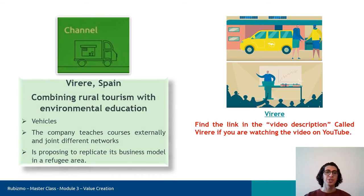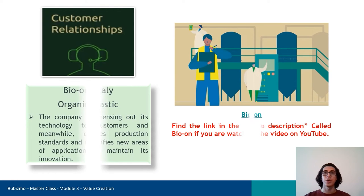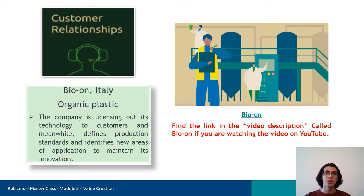As for the channels, vehicles transport tourists from the airport to the company, and the company teaches courses externally and joins different networks. In addition, they are proposing to replicate their business model in a refugee area. Referring to the company's value in improving customer relationships, the company is licensing out its technology to customers and meanwhile defines production standards and identifies new areas of application to maintain its innovation.